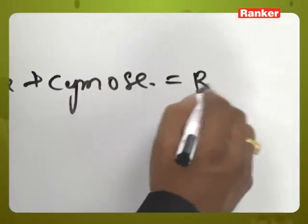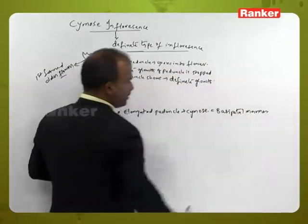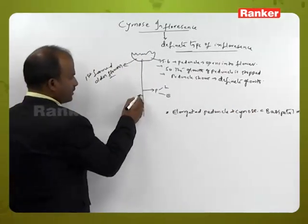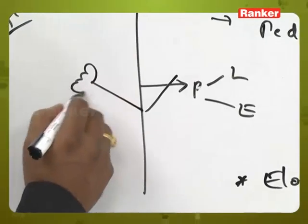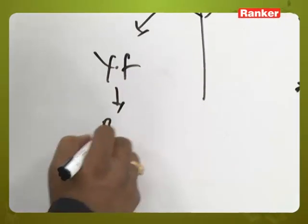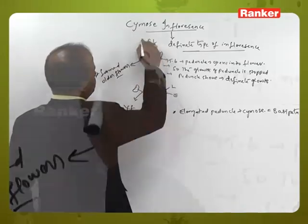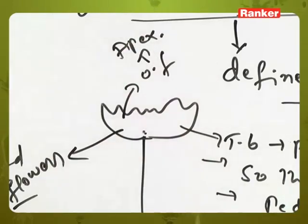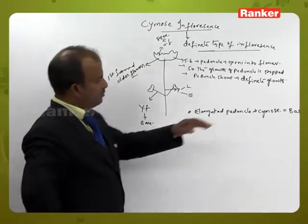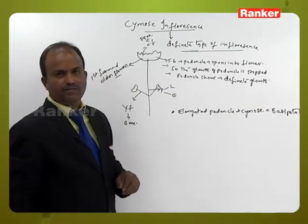The flowers are arranged in basipetal manner. What is meant by basipetal arrangement? Younger flowers are present towards the base and older flowers are present towards the apex. This type of arrangement is called basipetal manner.